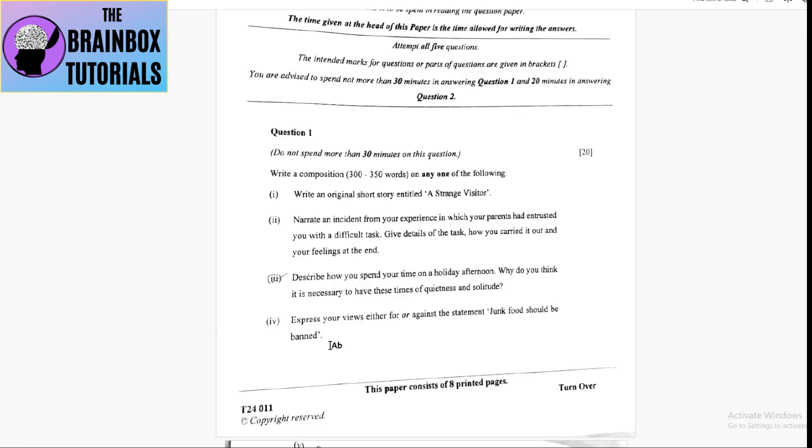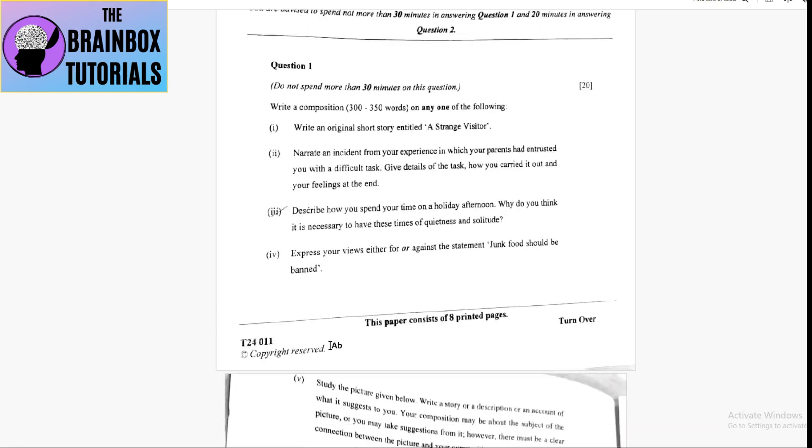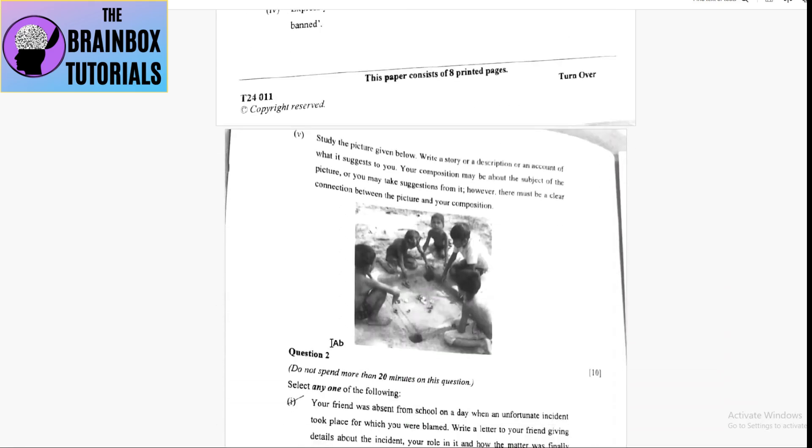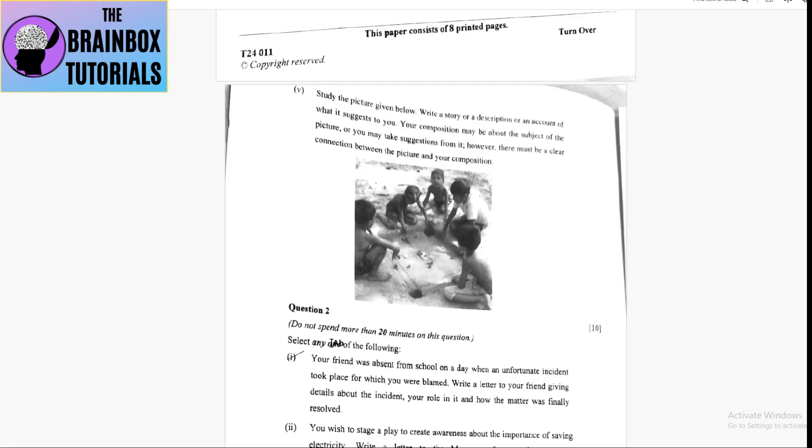The fifth one is picture composition. Here a picture of a few children playing carom has been shown. Children hail from underprivileged society, so their socio-economic conditions are not good, still they are enjoying their lives.